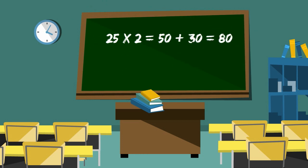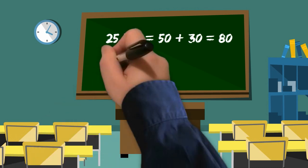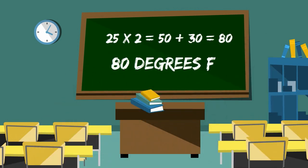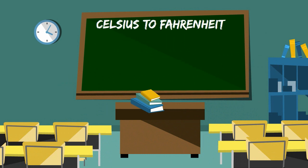Therefore 25 degrees Celsius is roughly 80 degrees. Here is why this works. The formula for converting Celsius to Fahrenheit is Celsius times 1.8 plus 32. 1.8 is almost 2 and it is fairly easy to double a number in your head.